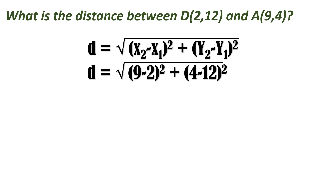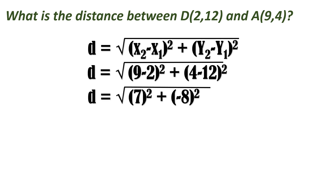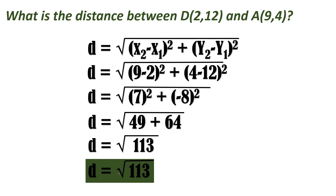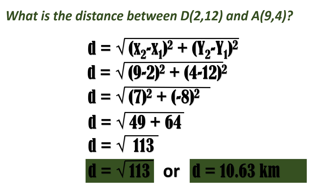Solve inside the parentheses first. 9 minus 2 is 7, square that. Plus 4 minus 12 — remember, 4 is smaller, so subtract and copy the sign of the bigger number, giving negative 8. Then 7 squared is 7 times 7, and negative 8 times negative 8 becomes positive 64. So 49 plus 64 gives us square root of 113. Using your calculator, that gives us a distance of 10.63 kilometers.